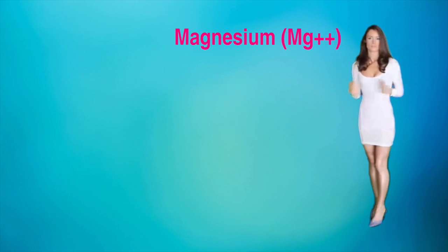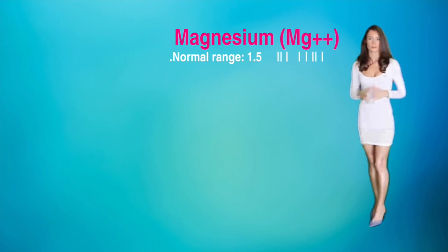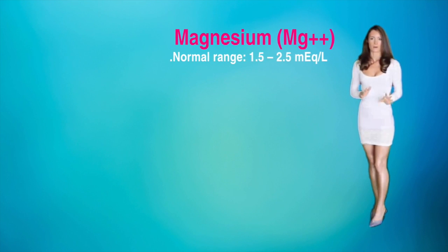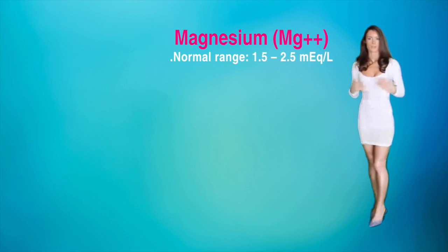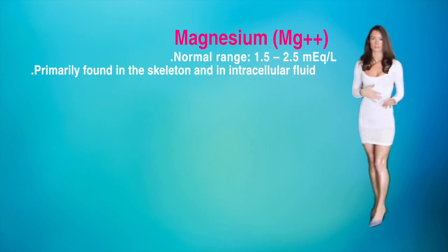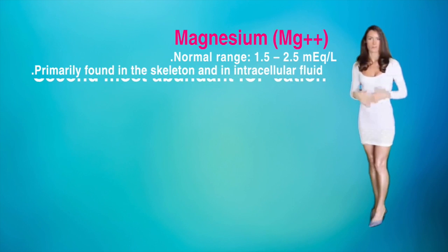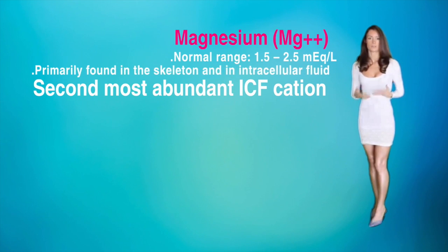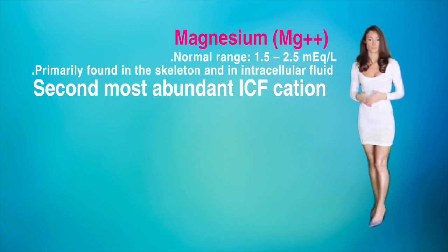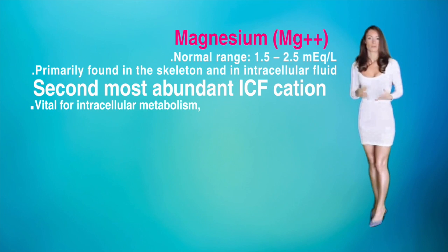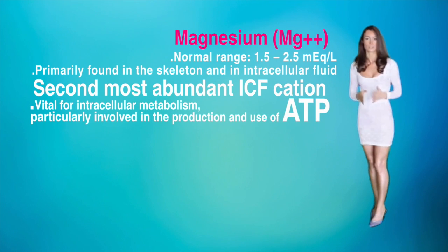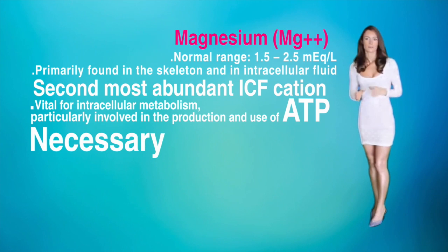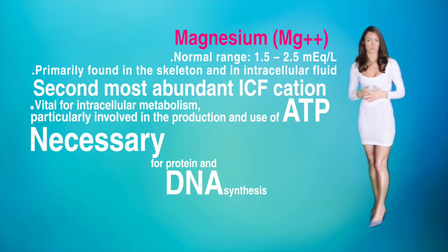Magnesium. A normal range for the electrolyte magnesium is about 1.5 to 2.5 mEq per liter. It is primarily found in the skeleton and intracellular fluid — it is the second most abundant intracellular fluid cation. It is vital for intracellular metabolism, particularly involved in the production and use of ATP. It is necessary for protein and DNA synthesis.